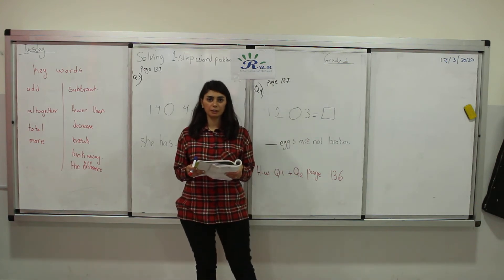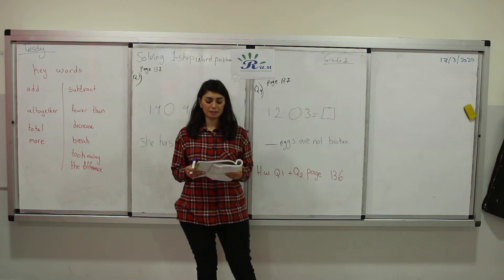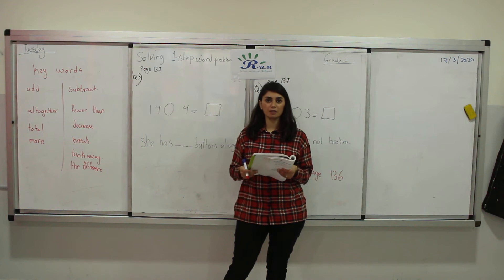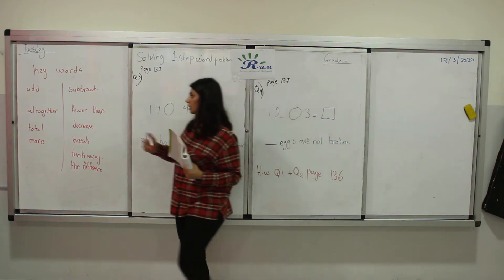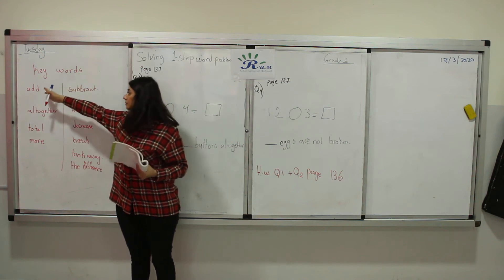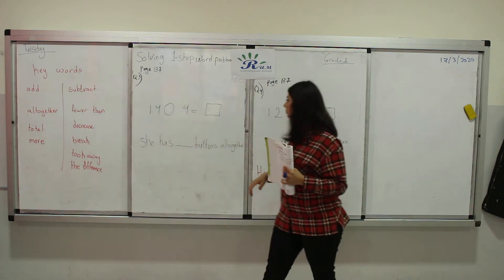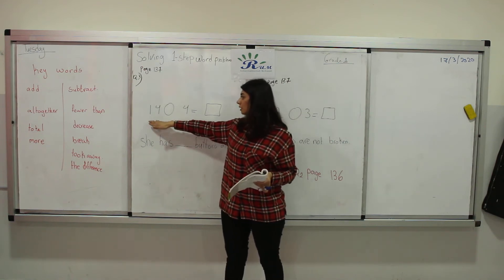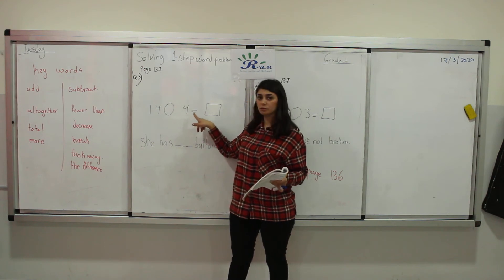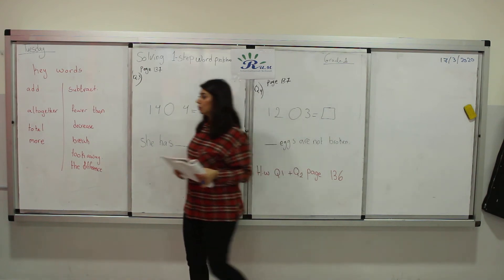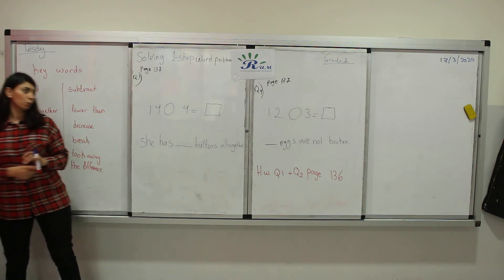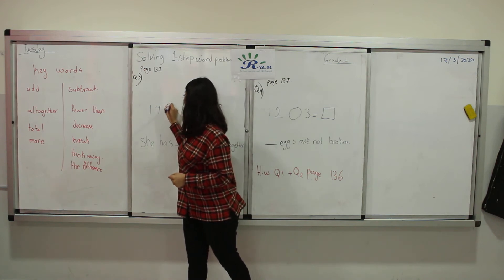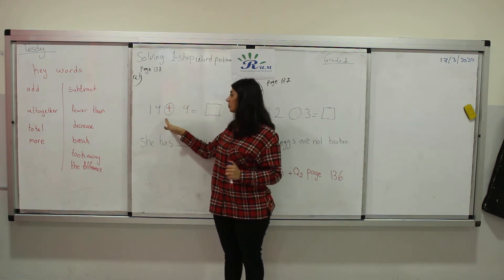Can you think of the keyword here? Yes, it is all together. Just circle all together please. And as we know, all together means we have to add. Here we have in the book, 14, 4 equals. As we say, we have to add, so write the symbol addition here. 14 plus 4.